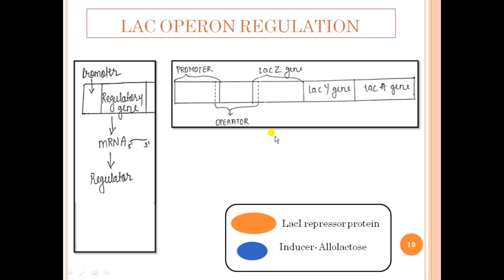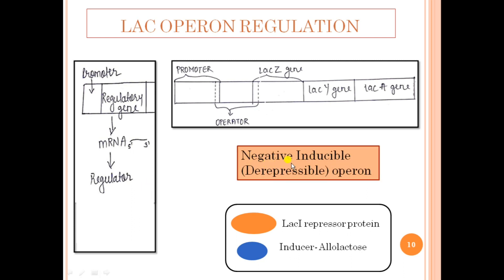Once transcription starts, more and more beta-galactosidase and beta-galactoside permease are produced, so more lactose enters the cell — like a positive feedback loop. The transcription of the lacZYA genes increases tremendously, about 1000-fold over the basal level. Therefore, the lac operon is said to be a negative inducible operon — negatively regulated by the lacI repressor protein, and de-repressible by the inducer molecule allolactose.